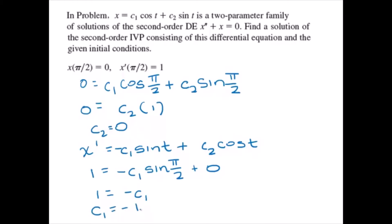Now to represent the solution: since c1 is negative 1 and c2 is zero, our final solution is x equals negative cosine of t. That is the solution of the second-order IVP consisting of this differential equation and the given initial conditions, x of pi over 2 equals zero and x prime of pi over 2 equals 1.